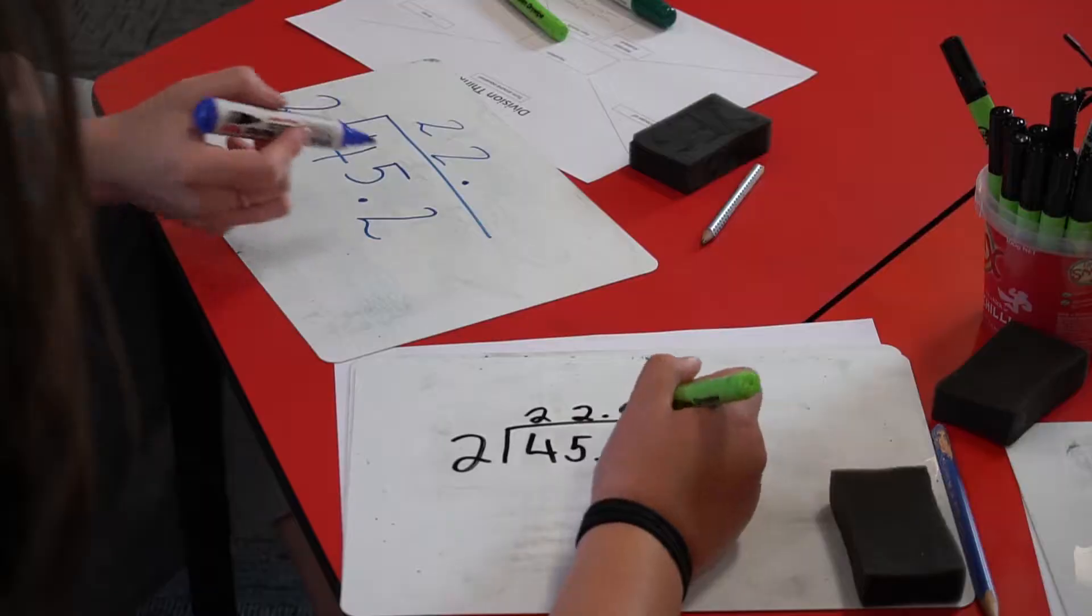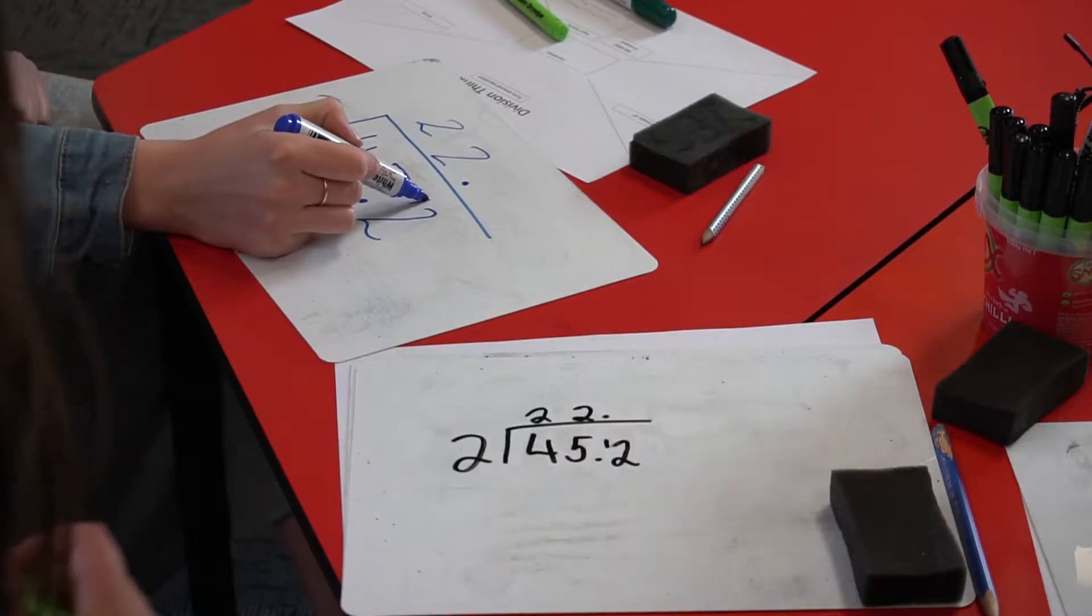So where do I put my remainders? Next to it. Right up the top next to it. It was a remainder of one. Easy.